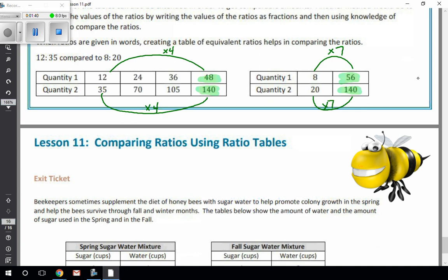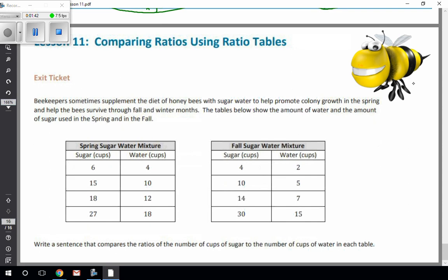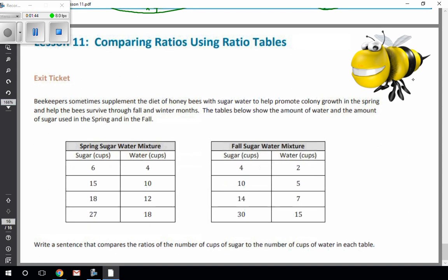So let's go ahead and do a problem here together. Beekeepers sometimes supplement the diet of honeybees with sugar water to help promote colony growth in the spring and help the bees survive through fall and winter months. The tables below show the amount of water and the amount of sugar used in the spring and in the fall.